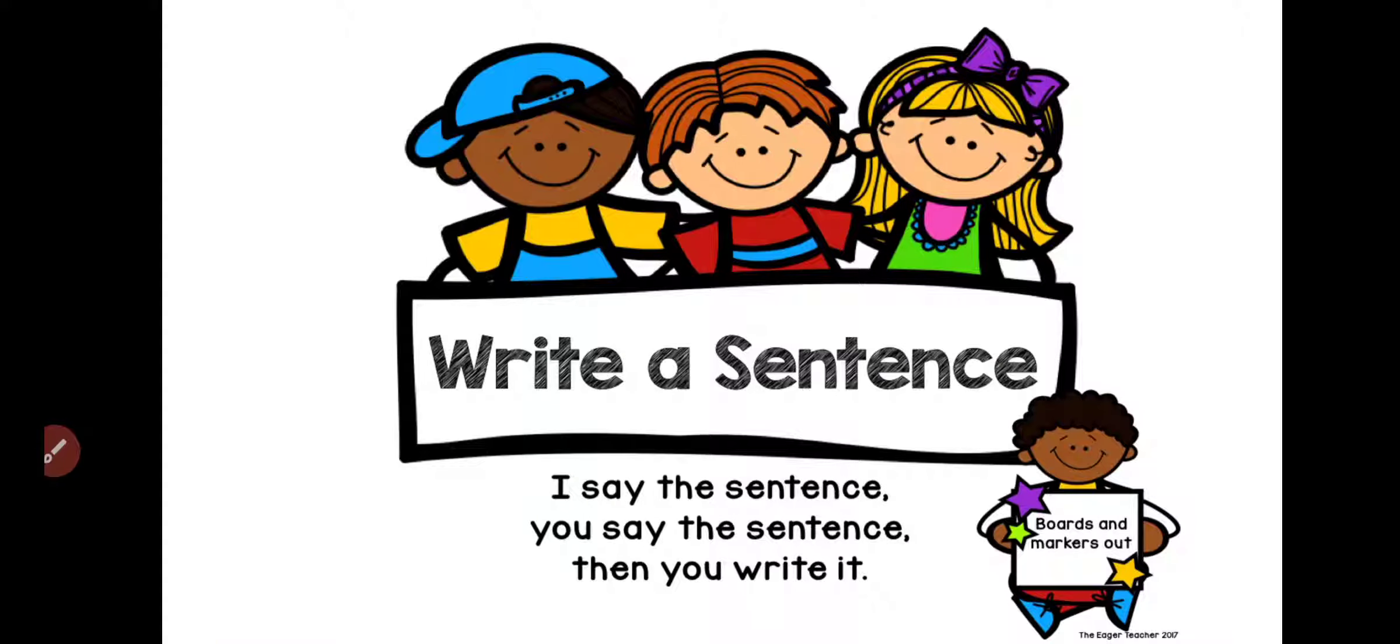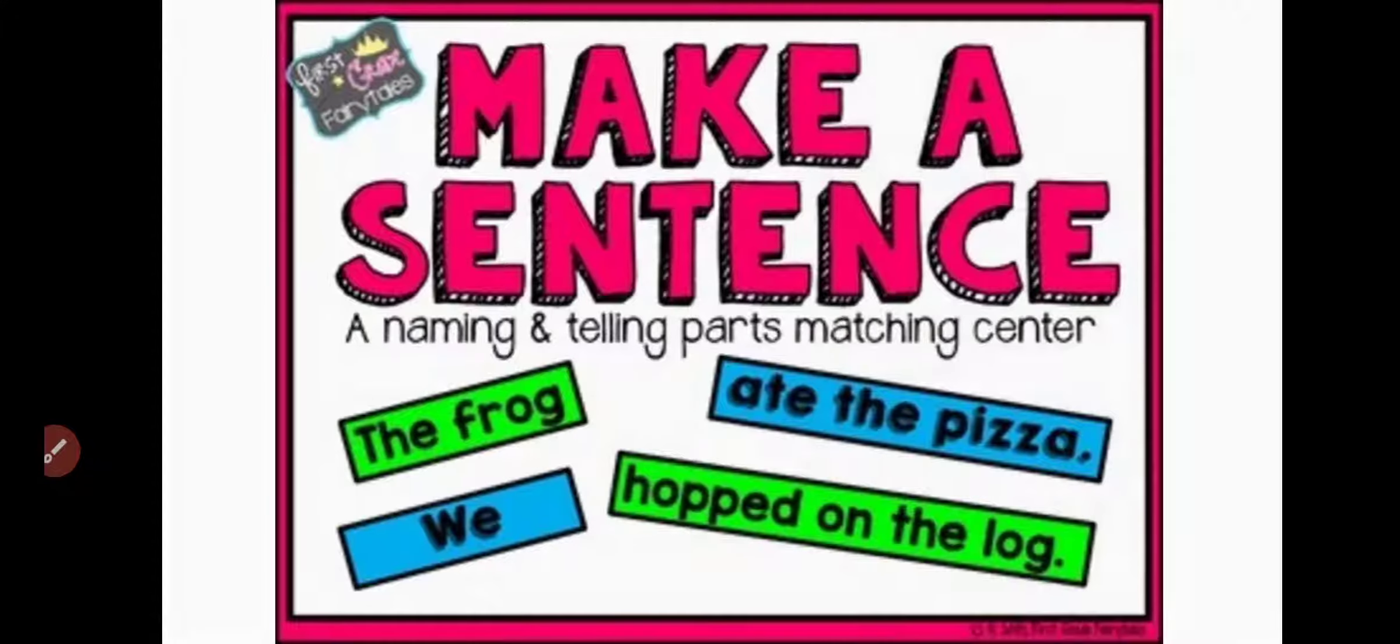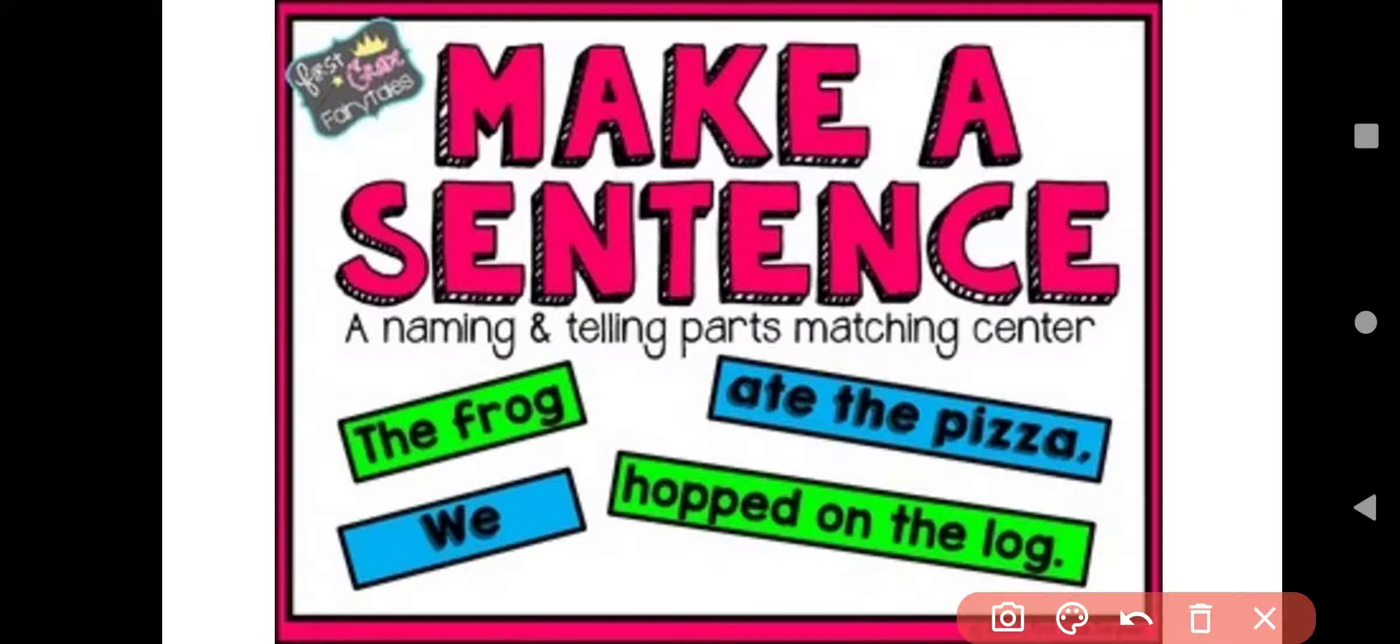Here, I say the sentence, you say the sentence, then you write it. Means, whatever you say or your friends say that all are sentences. Here, the frog ate the pizza. Now, the frog not ate the pizza. Sentence will be, the frog hopped on the log. Yes, exactly. That will be a meaningful sentence. And here, we ate the pizza.